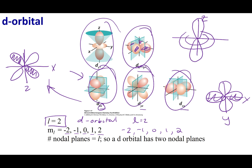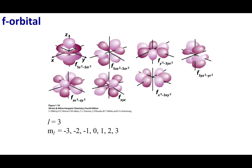You should memorize the shapes and orientations of the S, P, and D orbitals. You are not expected to know the shapes of the F orbitals, but just in case you're curious, these are the shapes of the F orbital. If L equals 3, M sub L goes from negative 3 to positive 3, stepping by 1, giving 7 versions of the F orbital.